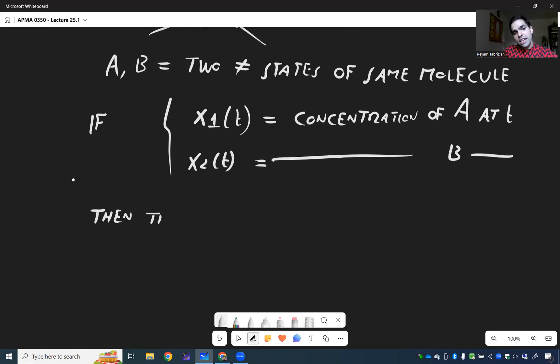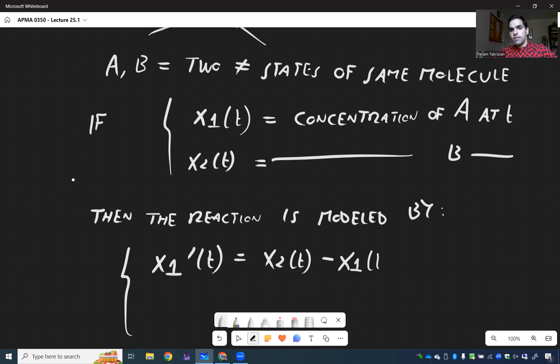So, then the reaction is modeled by what's called a system of reaction diffusion equations which says the derivative of A is B minus A, so the other molecule minus the original one, and the derivative of B or the rate of change in the concentration of B is A minus B.